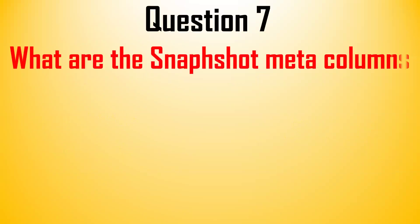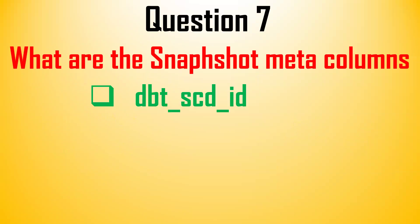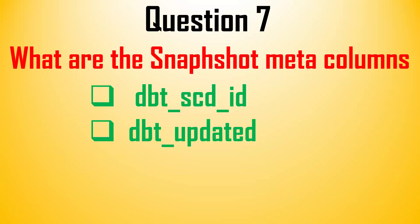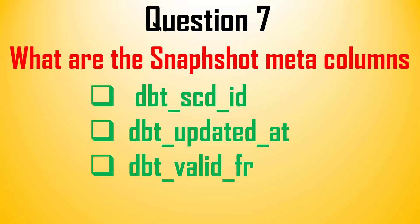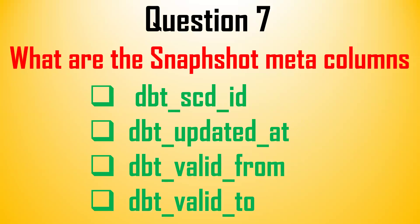The next question is: what are the snapshot meta columns? There are four snapshot meta columns: DBT_SCD_ID, snapshot ID, updated_at, valid_from, and valid_to. The first two are used internally by DBT, while valid_from and valid_to are used to track SCD Type 2.